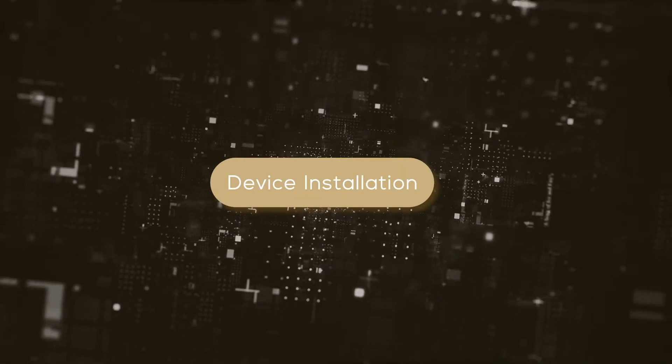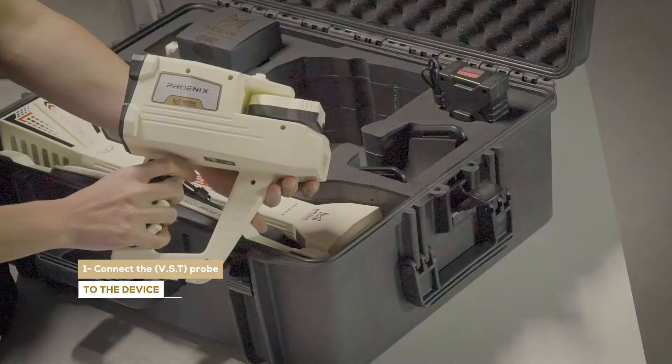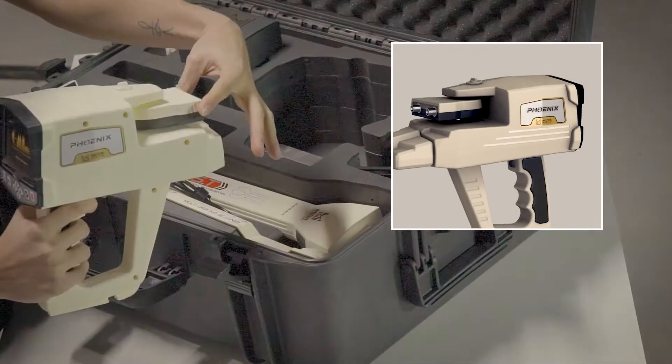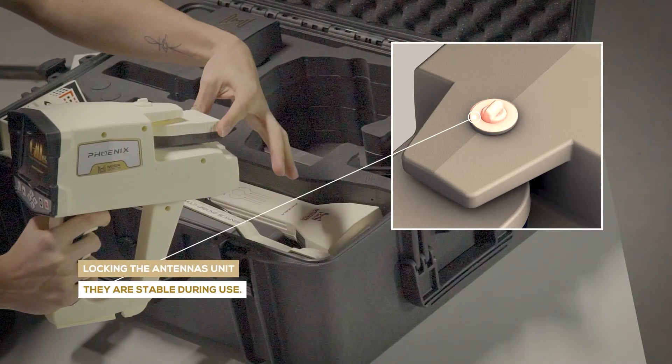Device Installation. Connect the VST probe. Ensure that the antenna's unit is locked and closed, so that the unit is stable during use.